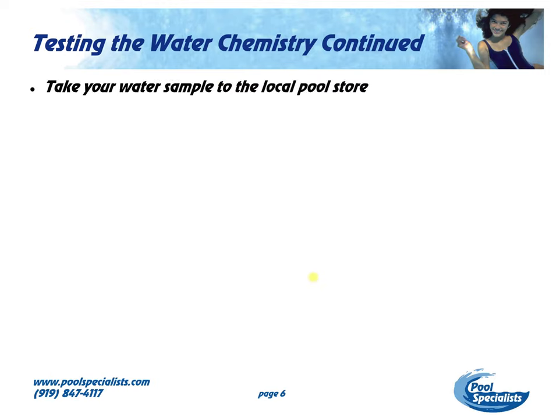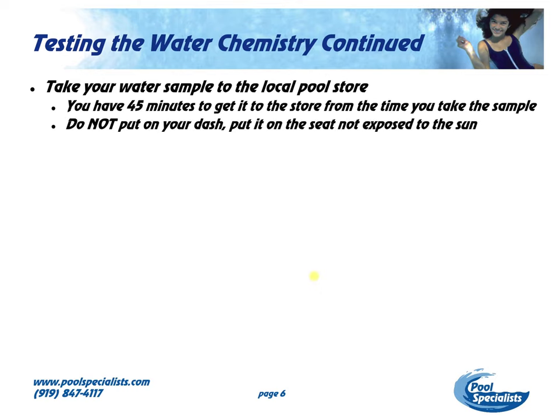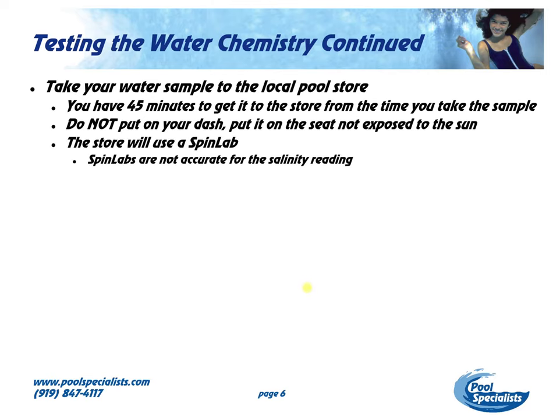Other testing methods: you can take your water sample to the local pool store. You have about 45 minutes from the time you take that sample until the time it is processed at the pool store. Do not put it on the dash — put it in the seat, someplace not exposed to the sun. The store is going to be using a spin lab. The spin lab is extremely accurate for everything but salinity; the salinity readings tend to be not so accurate.